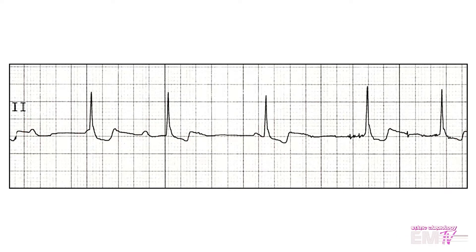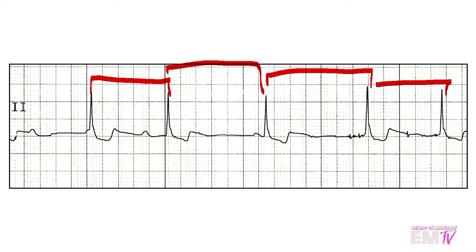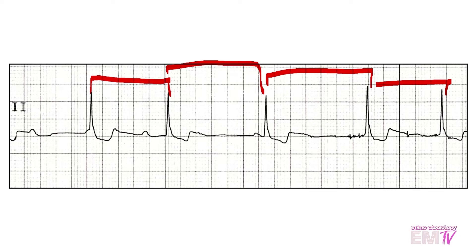Next thing I'll do is examine my R to R interval. My R to R interval here seems to be inconsistent. I'll then look at the width of the QRS complex. Despite that little slurring notch there near the S wave, this is actually a narrow QRS complex — it measures in at about 0.08, which is well within the boundaries of a normal QRS complex width.